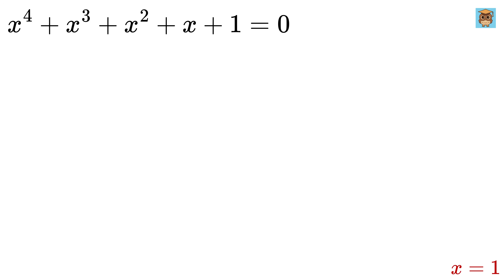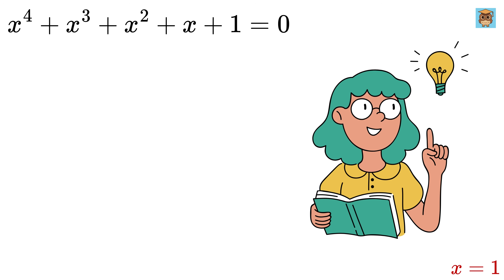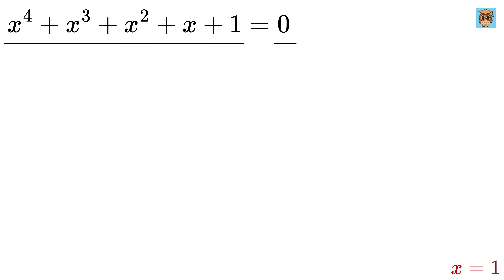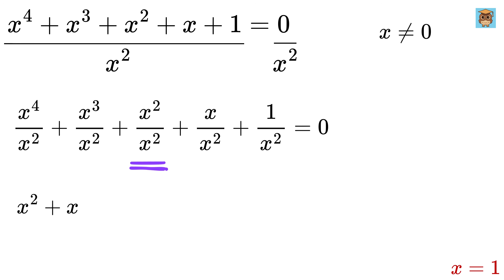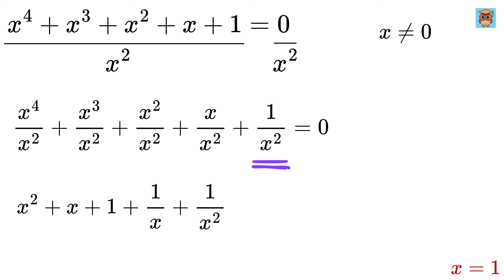This quartic equation will give us the remaining four values. To solve it, we use a clever trick: divide both sides by x², assuming x is not equal to 0. Writing each term separately: x⁴/x² becomes x², then x³/x² becomes x, then x²/x² is 1, then x/x² becomes 1/x, and finally plus 1/x² equals 0.